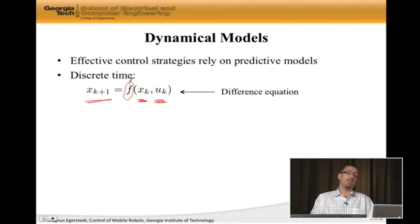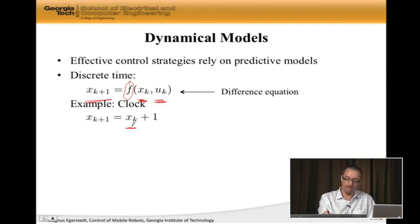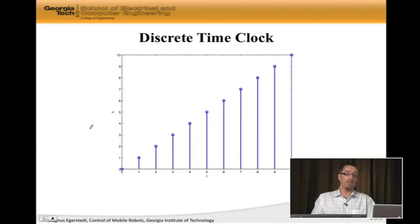And here's an example of this. This is the world's simplest discrete time system. It's a clock or a calendar. This is the time today. Now I'm adding one second, and this is the time one second later. So the time right now plus one second is the time one second later. This is clearly a completely trivial discrete time system, but it is a difference equation. It's a clock. So if you plot this, we see that here is the state, which is what time it is, as a function of time.